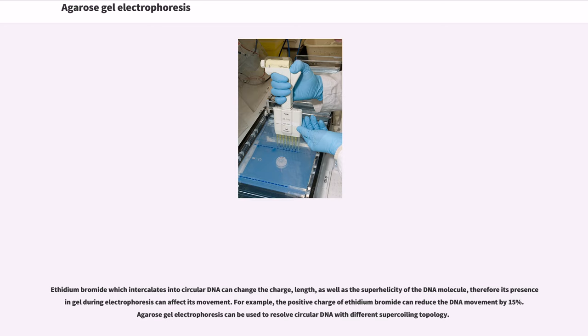Ethidium bromide, which intercalates into circular DNA, can change the charge, length, as well as the superhelicity of the DNA molecule, and therefore its presence in gel during electrophoresis can affect its movement. For example, the positive charge of ethidium bromide can reduce the DNA movement by 15%. Agarose gel electrophoresis can be used to resolve circular DNA with different supercoiling topology.